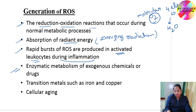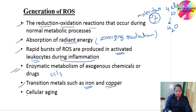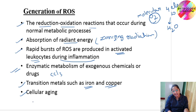A rapid burst of ROS is produced in activated leukocytes during inflammation. Other sources include enzymatic metabolism of exogenous chemicals or drugs — for example CCl4 — transition metals such as iron and copper, and the last example is cellular aging. So these are the examples of generation of reactive oxygen species.